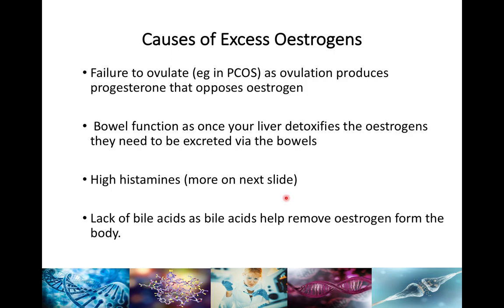A lack of bile acids is also an issue, as bile acids help remove estrogen from the body — they bind and excrete estrogen. What can impact bile acid production is methylation, as you need methylation working properly to produce phosphatidylcholine and taurine. Both of these nutrients help make bile acids, and if you've got problems with methylation, you're not making bile acids and will have problems excreting estrogen.